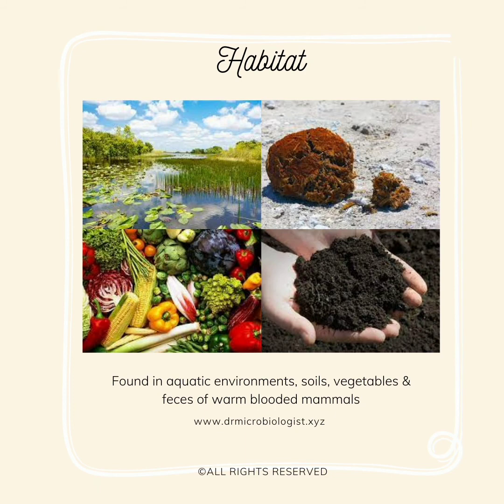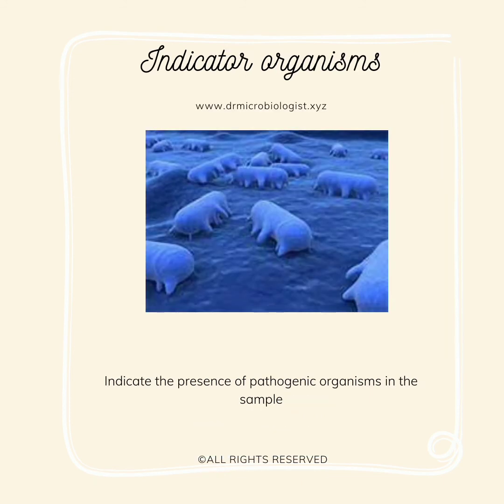They are found in the aquatic environment, soil, feces of warm-blooded mammals, and vegetables we consume. Coliform bacteria are often called indicator organisms — they themselves do not cause much serious illness, but they indicate the presence of other pathogenic fecal microorganisms in a collected water sample. It is presumed that if coliform bacteria are present in a water sample, then there is a tendency for other pathogenic bacteria to be present as well. Therefore, they are used in sanitation procedures of food and water.